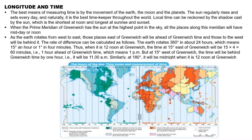As the earth rotates from west to east, places eastward from Greenwich will be ahead in time. The earth rotates 360 degrees in about 24 hours, which means 15 degrees per hour, or 1 degree in 4 minutes. So if you are located 15 degrees east of Greenwich, the time difference will be 15 into 4 minutes, that is, 60 minutes or 1 hour ahead of Greenwich time.